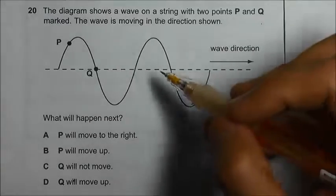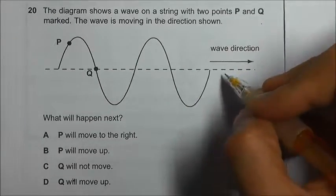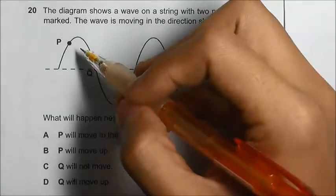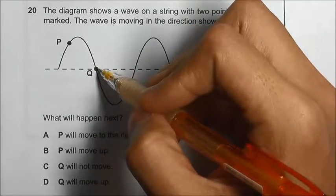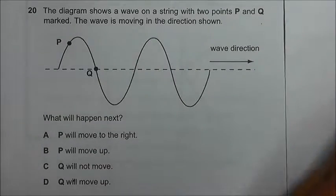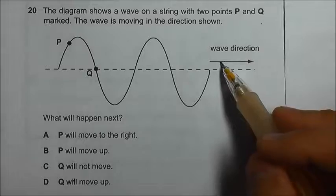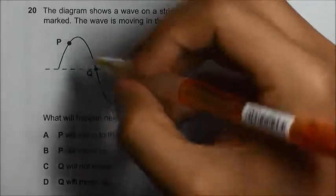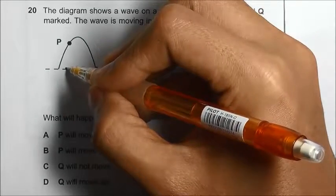Okay, we have a wave that is moving to the right as indicated here. So the question asks us what will happen to the particle P and particle Q of the wave in a moment later. So in the next instance, since the wave is moving in this direction, the whole wave will be shifted to the right like this.